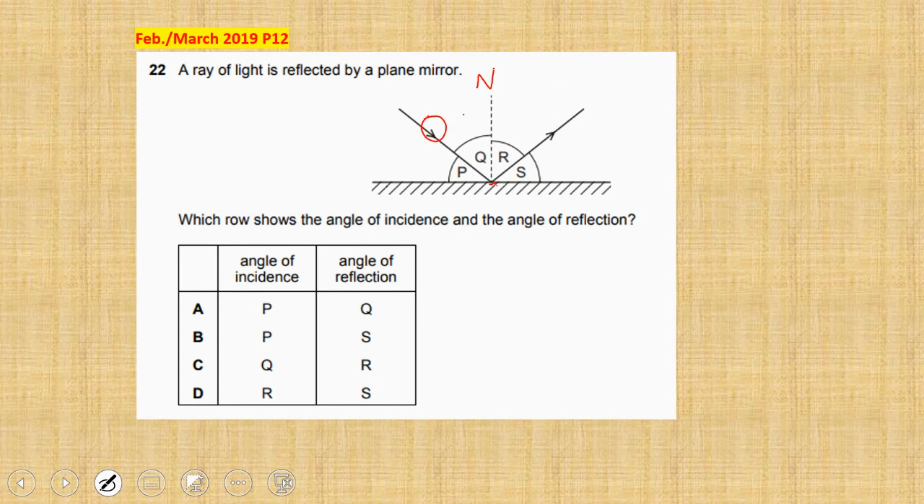Which is Q. Then due to reflection, we have an outgoing light ray, which is the reflected light ray, and it makes an angle of reflection which is R.